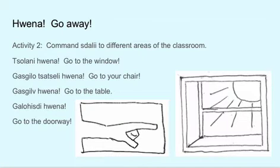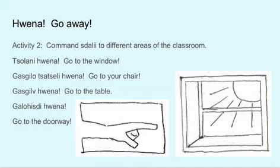Wena — Go away. Activity two: Command Stali, your friend, to different areas of the classroom. Go to the window. Go to your chair. Go to the table. Go to the doorway.